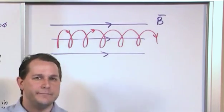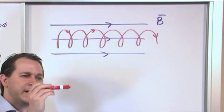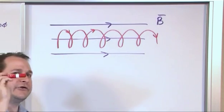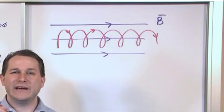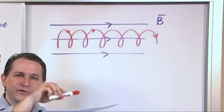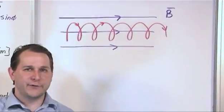Because it's qv cross b, right, if you have a magnetic field line this way, and I push it, if I shoot an electron directly parallel to the field, there is no magnetic force. Because v cross b, if they're in the same direction, there's no angle between them. Sine of zero is zero. So there's no magnetic force.